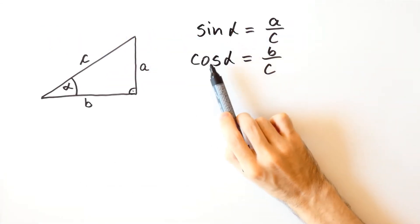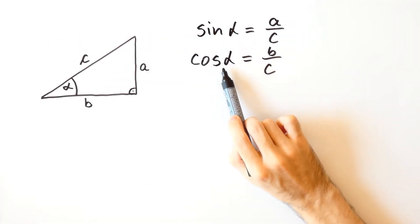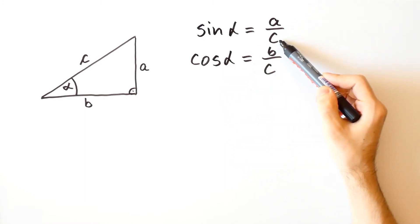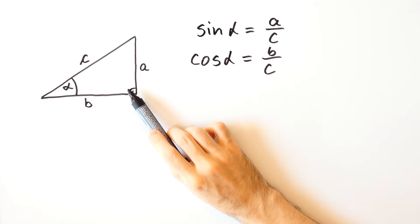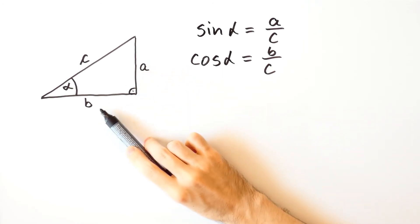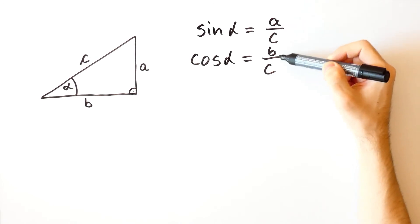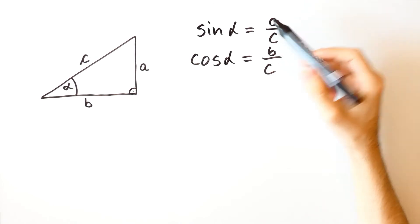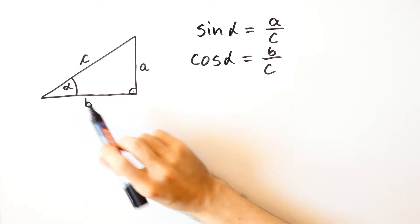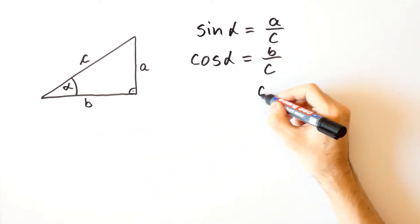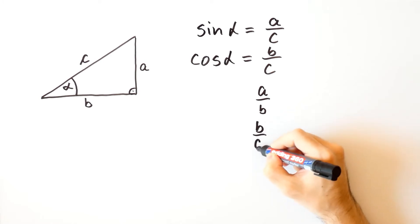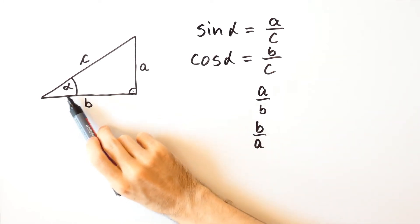We define the sine and the cosine of an acute angle as the ratio of the corresponding leg to the hypotenuse of a right triangle. But what about the ratios of the two legs? Just as these two ratios don't depend on the particular right triangle but only on the angle alpha, so will the ratios a over b and b over a depend only on the angle alpha.